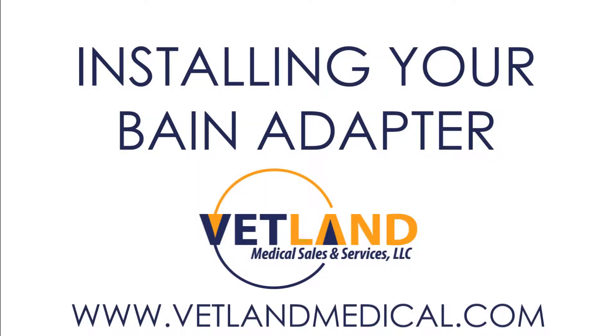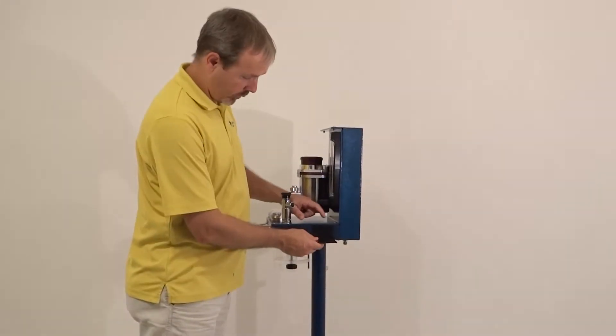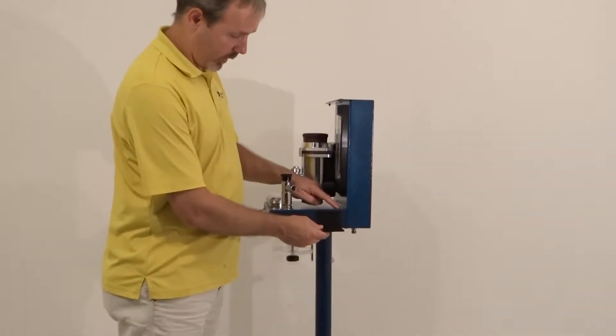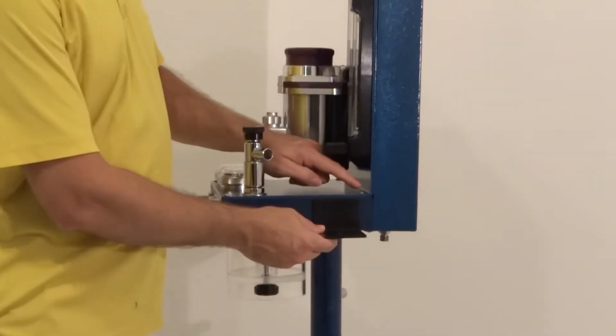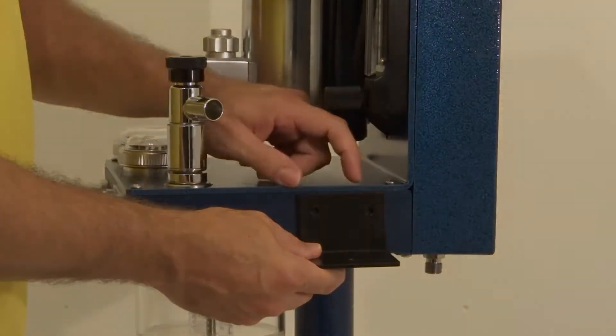Installing your Bain Adapter. You'll install the Bain Adapter using the provided metal bracket. Make note to avoid the screw on the top of the machine's block panel.